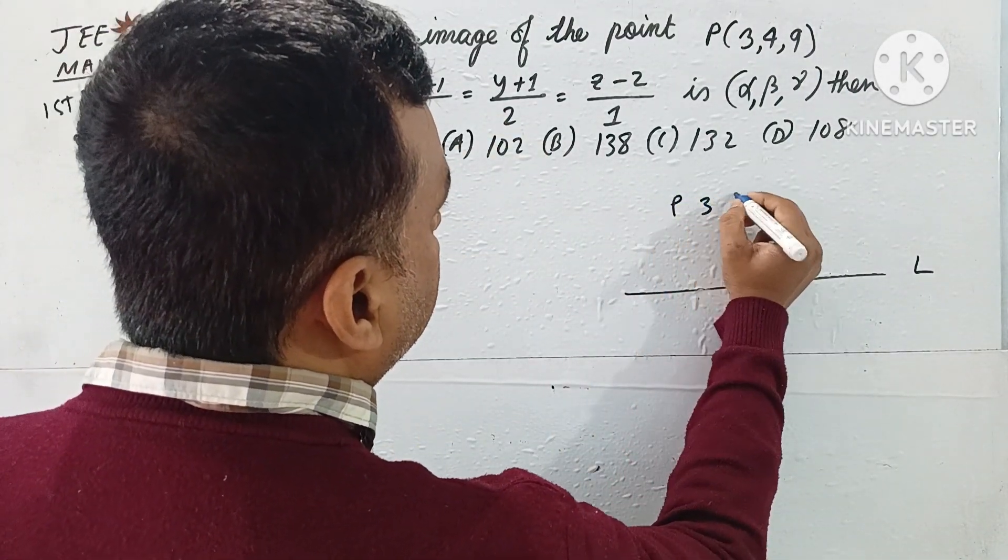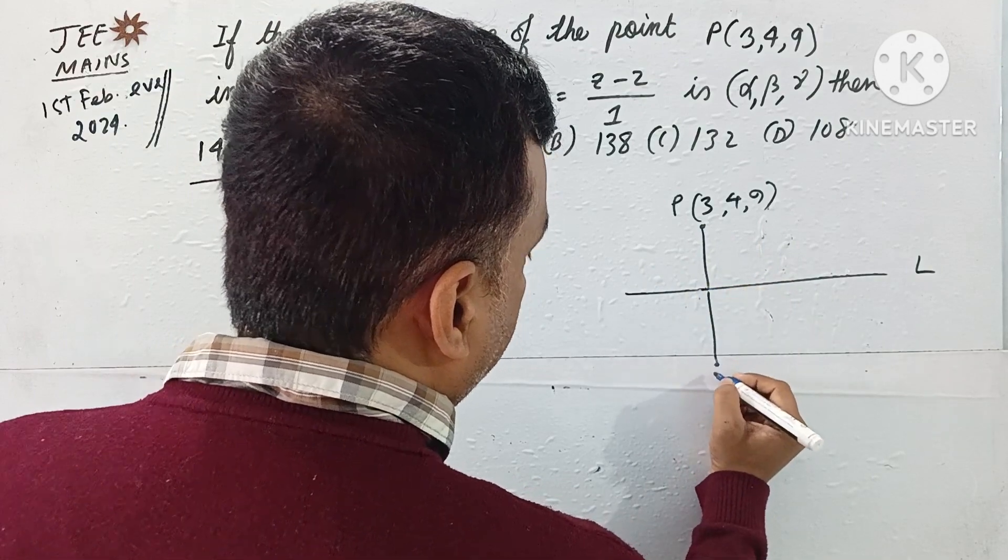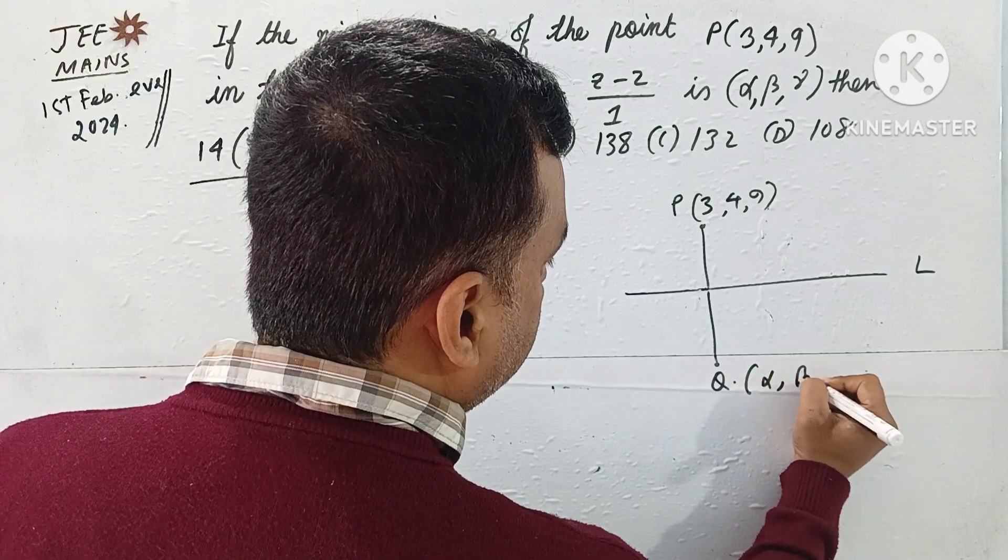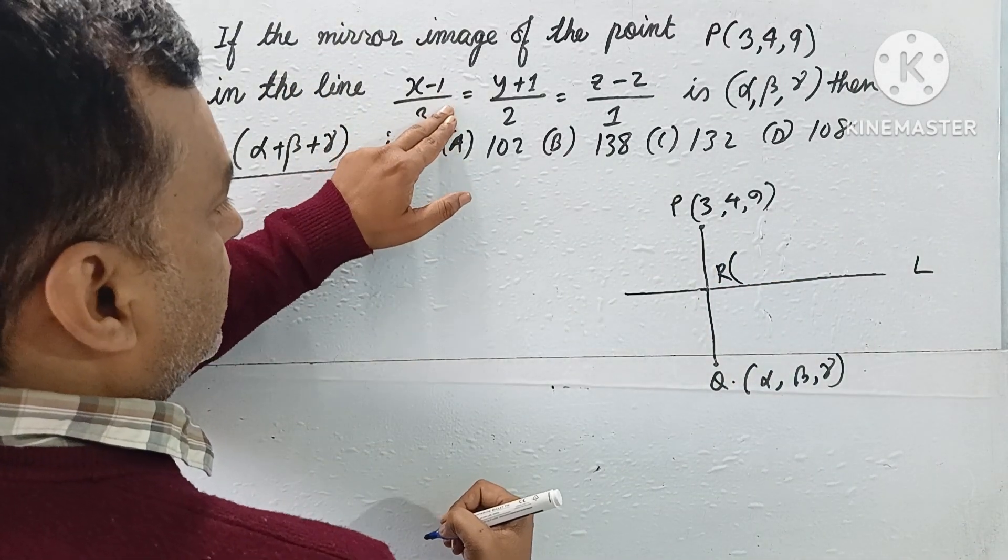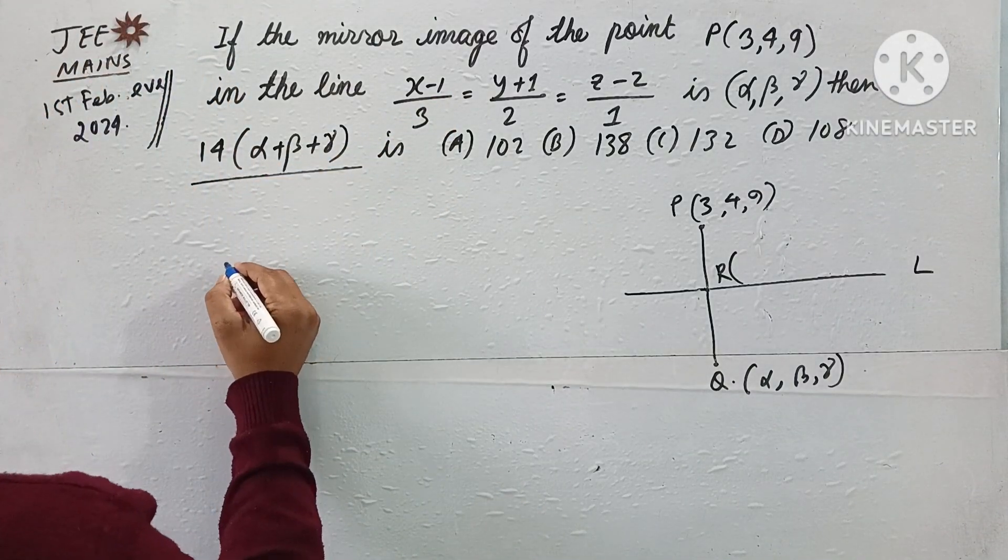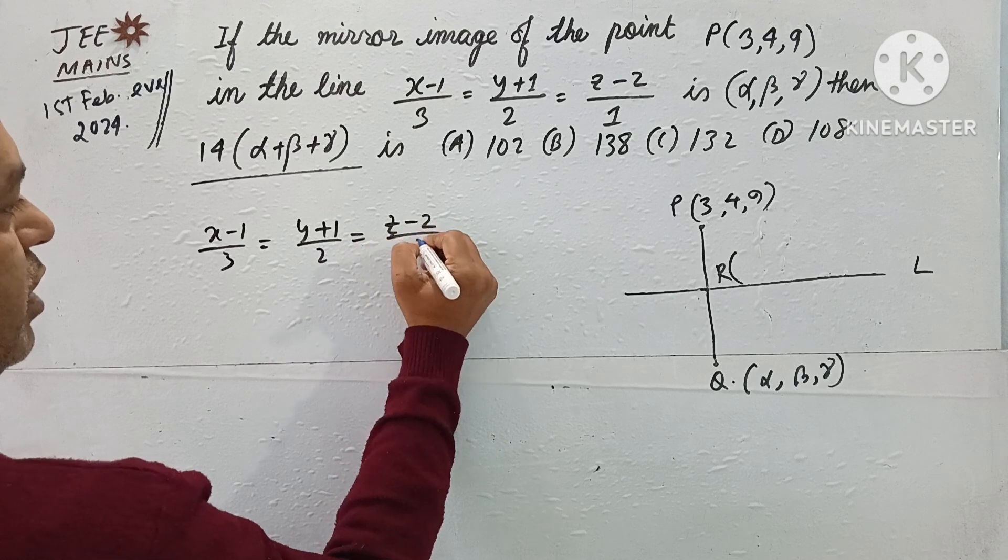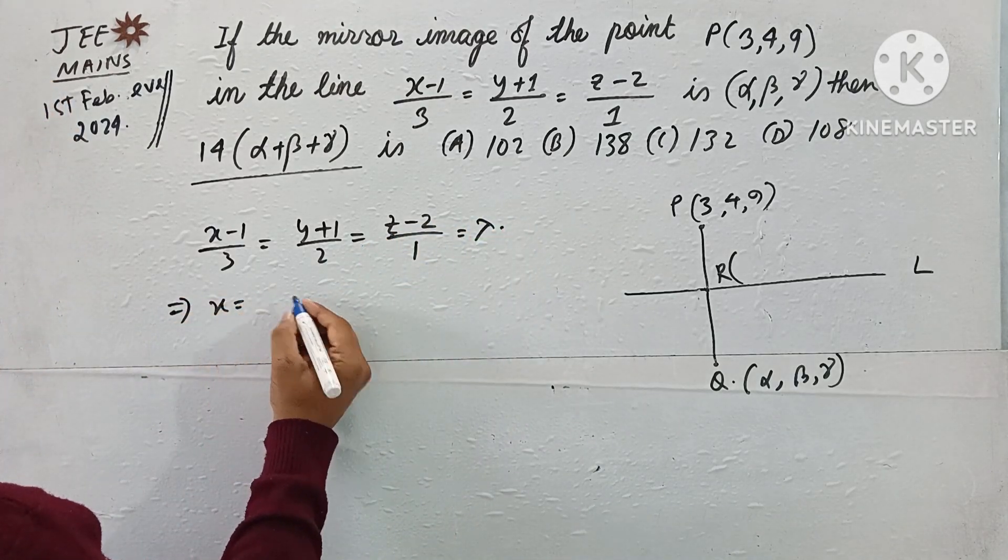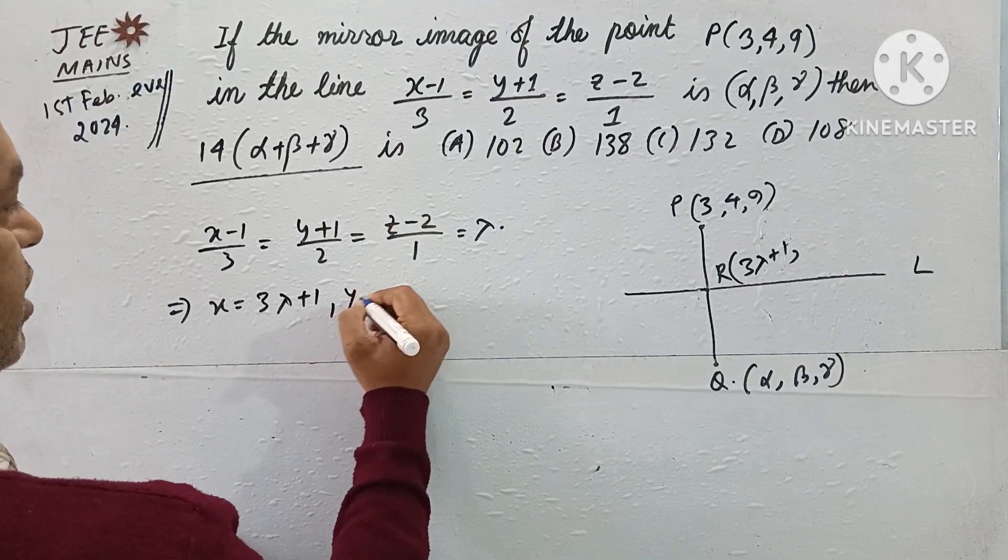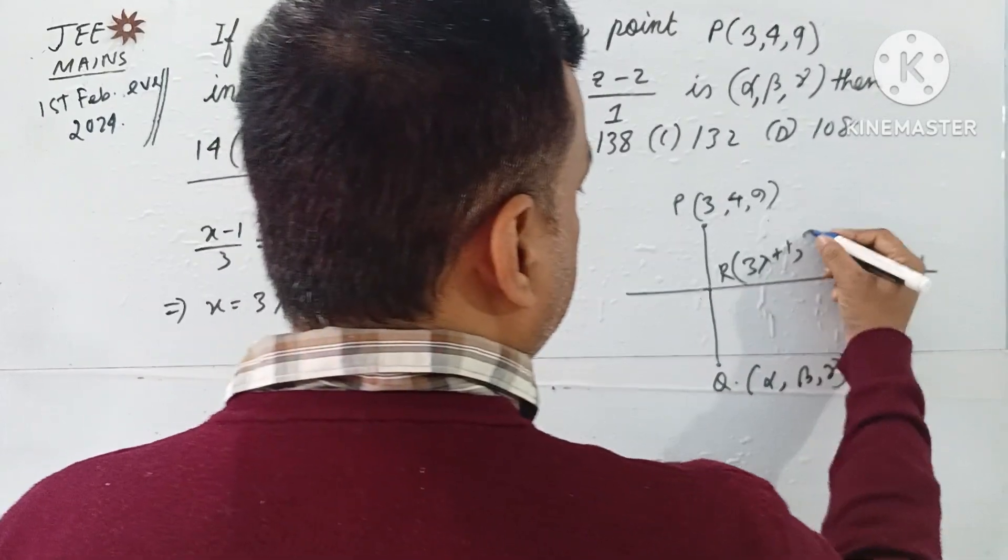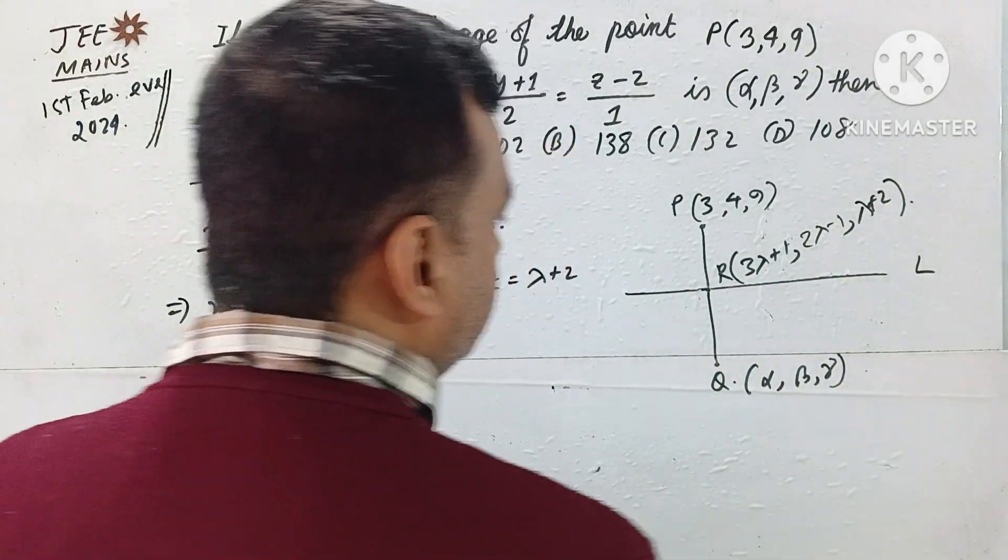We have mirror image with respect to a line. So point P(3,4,9), its image perpendicularly below, suppose Q is our point to find with coordinates (α,β,γ). If R is a point on the line, the coordinate we can take as x = 3λ+1, y = 2λ-1, and z = λ+2.